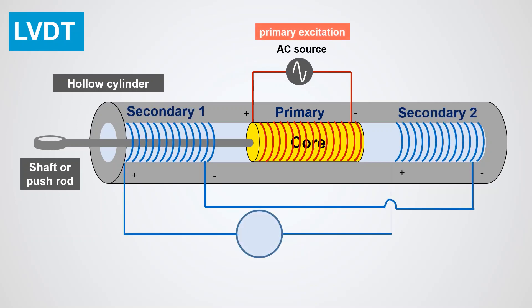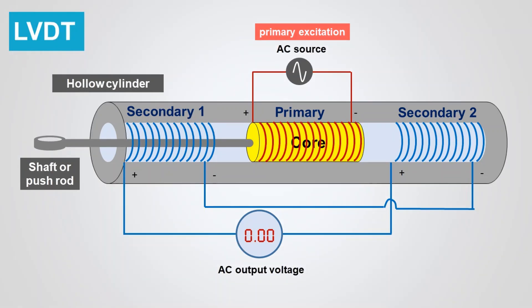The two secondary coils are connected in series generating AC output voltage. When the core is at the center, called a null point, no voltage appears at the secondary output.